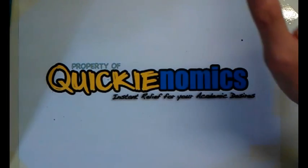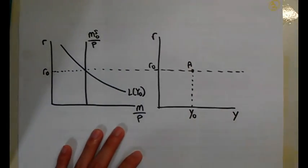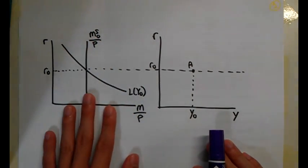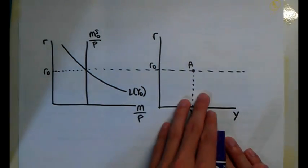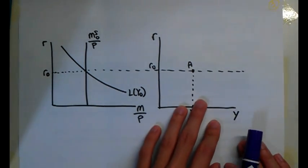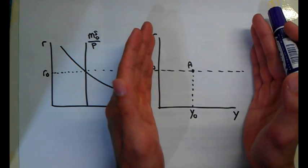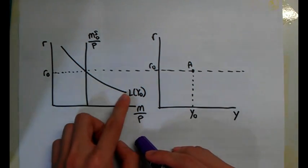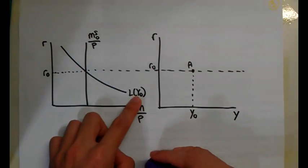Let me show you how to derive the liquid assets model. I have a few graphs here — we will go through this slowly. On the left side, I have the diagram for the liquid assets market, and I'm going to use this to derive the LM function, which is on the right side. This will eventually end up as your IS-LM model when you combine it with your IS curve. Looking at the liquid assets market, we have the demand curve which is downward sloping, denoted by L with Y-naught inside.